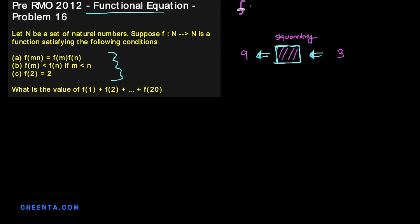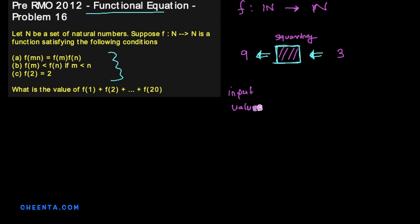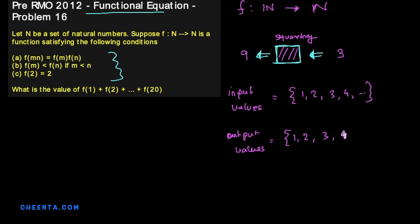In this particular problem, the function f is from natural numbers to natural numbers. That means we are restricting to functions whose input values are positive integers and whose output values are also positive integers — the set {1, 2, 3, 4, 5, ...}. That is what the notation f: N → N means.